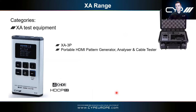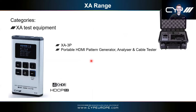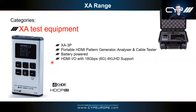Let's start with test products. The XA3P is our portable handheld signal generator, analyzer, and cable tester. It's probably only six to seven inches tall — a very easy to hold handheld device. It is battery powered so it can be taken on site, charged via USB. It supports full 18 gigabits per second and can be used for pattern generating, signal analyzing, or cable testing.